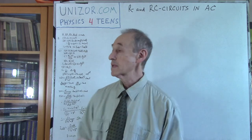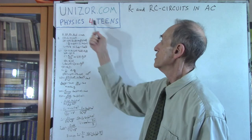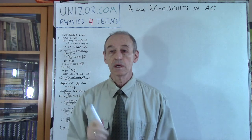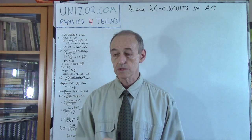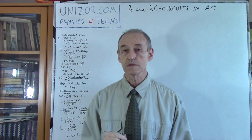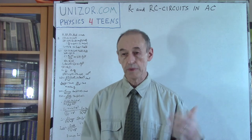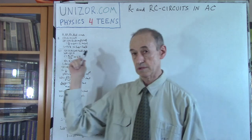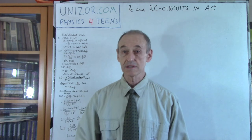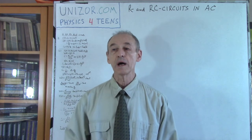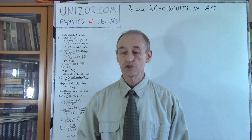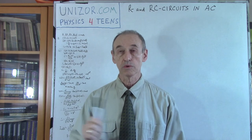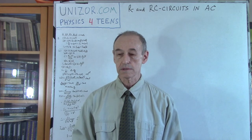This lecture is part of the course Physics for Teens presented on unizor.com. I suggest you watch this lecture from the website — go to the menu on the left where you choose Physics 14. This is the electromagnetism part of this course and the chapter is called Ohm's Law for Alternating Currents.